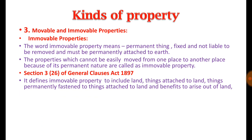Land means the surface of earth — the portion of earth is called land. Things can be attached to earth in two ways: when naturally rooted, like trees, or embedded into earth, like buildings. Things permanently fastened to things attached to earth — such as doors and windows attached to the walls of houses and buildings — are also made part of immovable property.